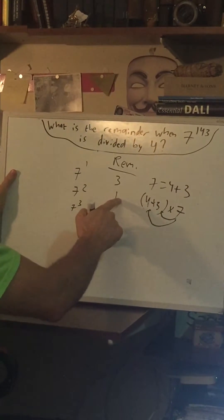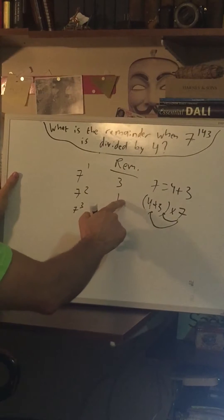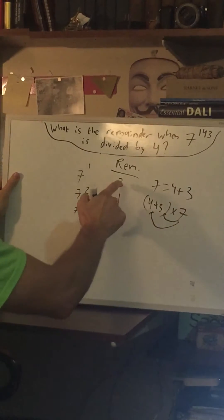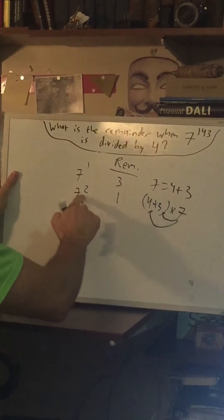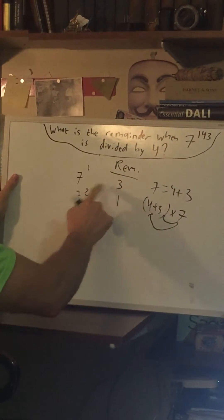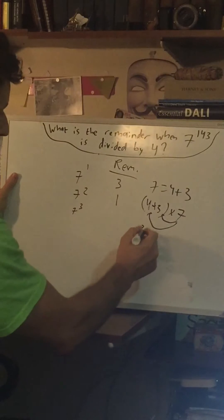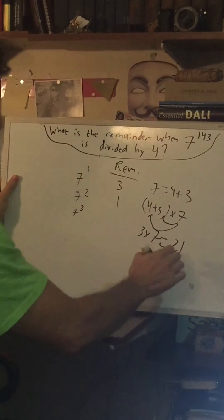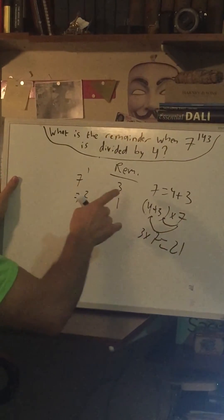So to calculate this one in an easier way, we can just do 3 times 7. In other words, take this remainder, multiply it by 7 rather than multiplying 7 by 7. So 3 times 7 is 21. And 21 divided by 4 leaves a remainder of 1.